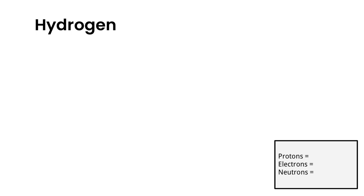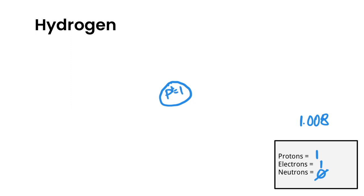That was the Bohr-Rutherford diagram for sodium. For hydrogen, the atomic number is 1, giving us one proton, one electron, and a mass number of 1, so one minus one gives us zero neutrons. We draw a circle for the nucleus, write one proton and zero neutrons inside, draw the first shell, and place one electron. That completes the Bohr-Rutherford diagram for hydrogen.